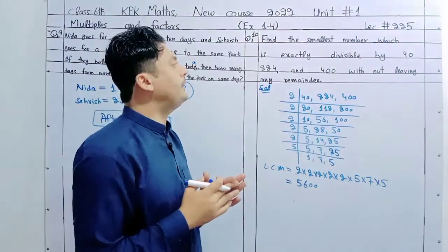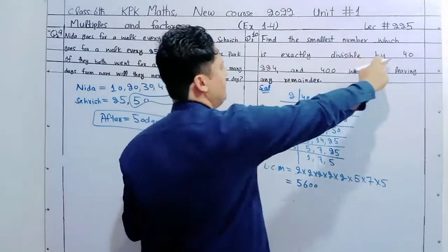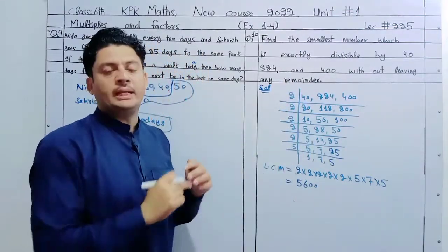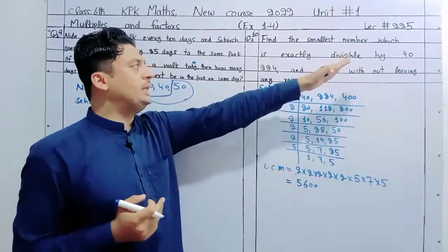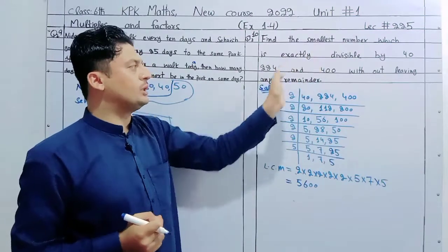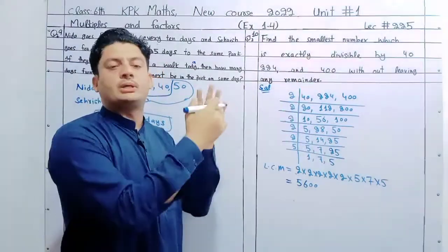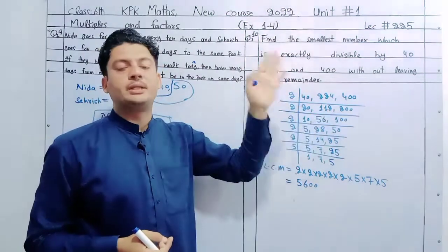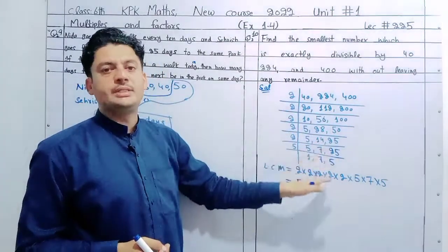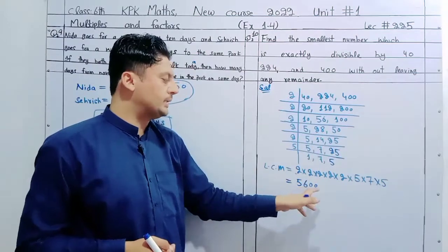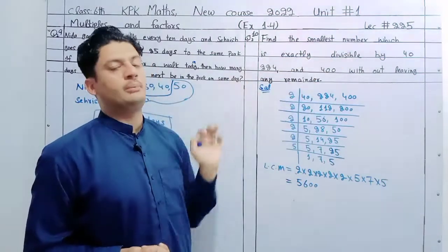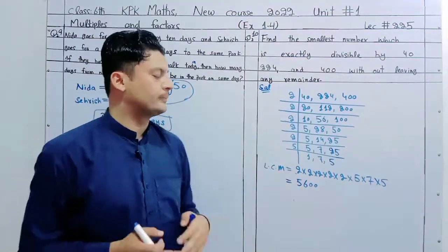Question Number 10. Find the smallest number which is exactly divisible by 40, 224, and 400 without leaving any remainder. We need to find the LCM of 40, 224, and 400. Using the division method for LCM, the answer comes out to be 5600. That is the smallest number divisible by all three.